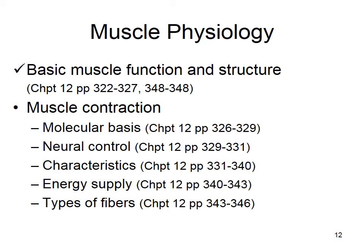You can control contraction strength by how many muscle cells fire, and also by how many myosin heads bind to actin. You can get stronger contraction from a single muscle fiber by releasing more calcium. The way to release more calcium is by having higher-frequency action potentials on the motor neuron, which produces summation of contraction.